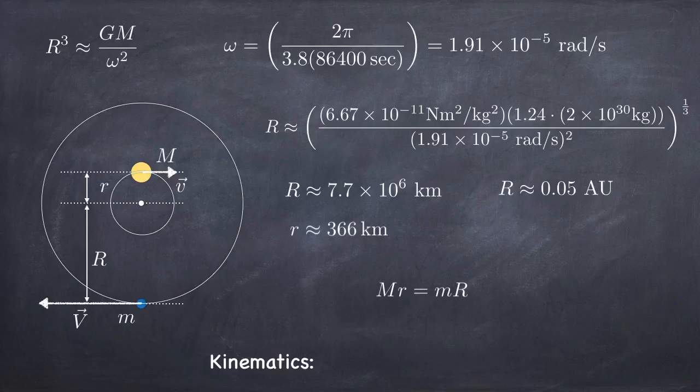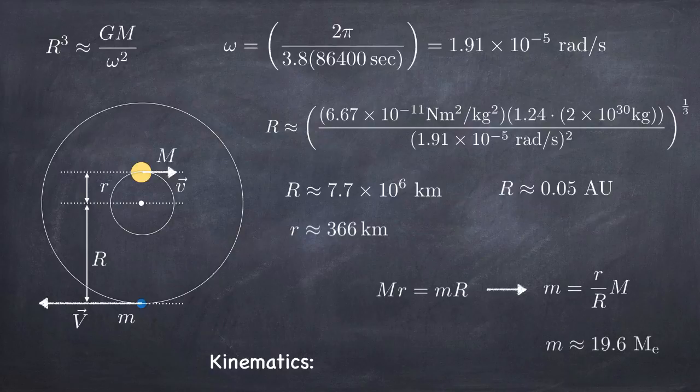Now we can take the center of mass relationship, the kinematics we worked out earlier, and notice that we have the mass of the star. We have the star's distance from the center of mass. We now have the planet's distance from the center of mass. The only thing we're missing is the mass of this extrasolar planet. So we can now solve this guy for the mass of the extrasolar planet. It turns out to be about 19.6 earth masses.